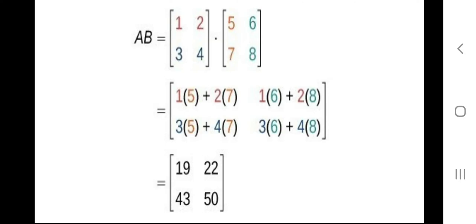Then the first row with the second column: 1×6 plus 2×8. For the second row, 3×5 plus 4×7, and then 3×6 plus 4×8. Solving each and adding the products, the resulting matrix entries are 19, 22, 43, and 50.